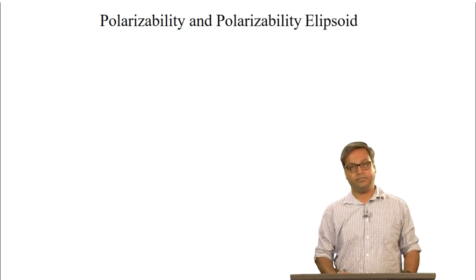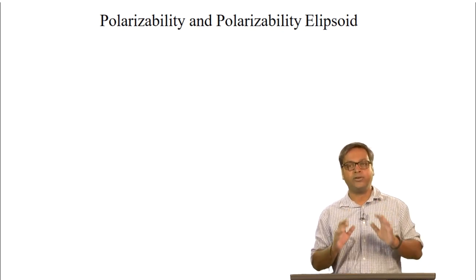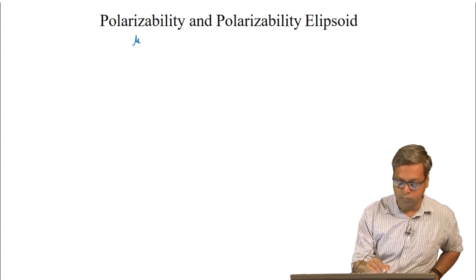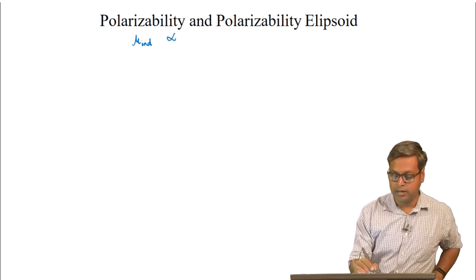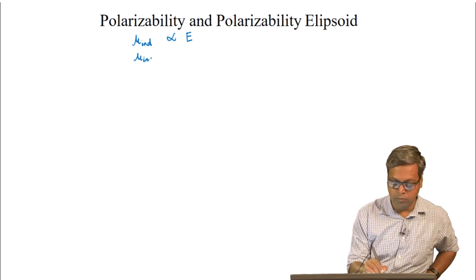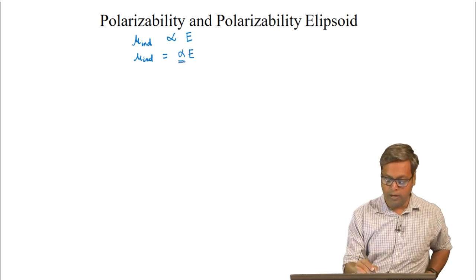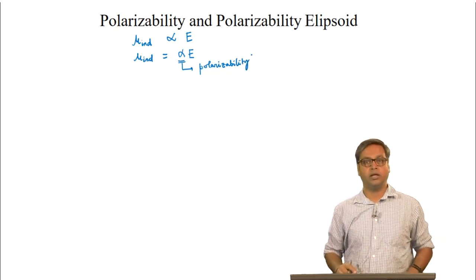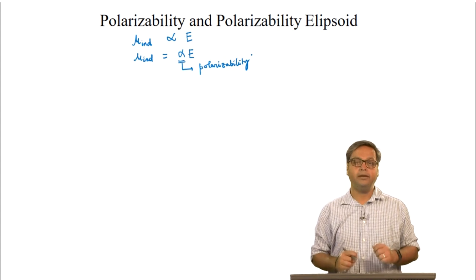In the first lecture on Raman spectroscopy, we had stated that as long as the electric field of the electromagnetic radiation is not too strong, the induced dipole moment, which we can write as μ_induced, is directly proportional to the applied electric field E. So we can write μ_induced equals α times E, where α is polarizability. The polarizability is a characteristic of the molecule that depends on the molecular structure and the nature of the bonds.